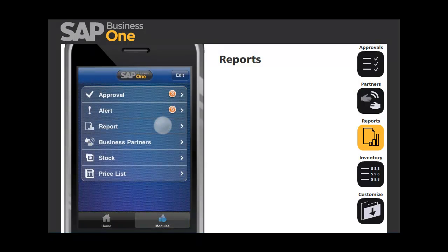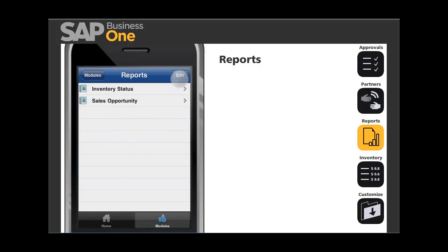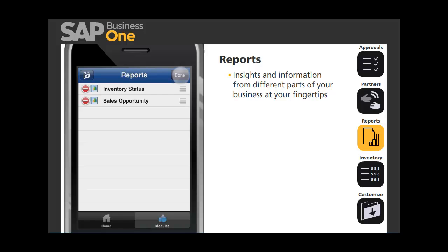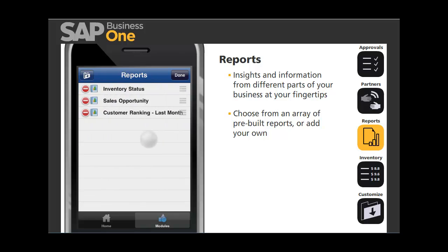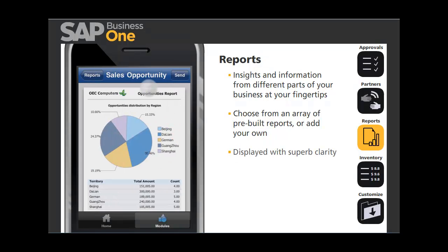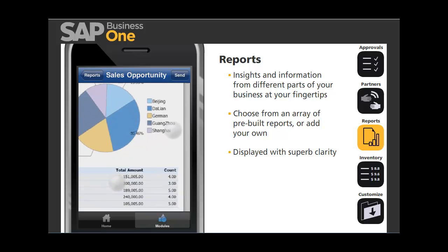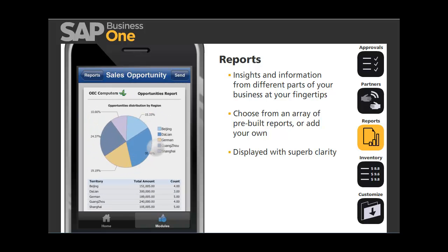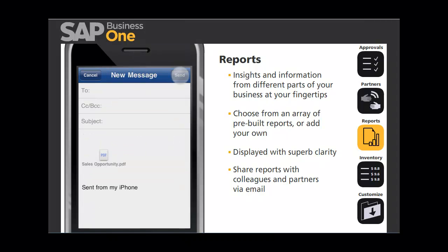Using the built-in reports enabled by SAP Crystal Reports software, you can get insights and information from different parts of your business at your fingertips. You can choose from an array of pre-built reports, or you can add your own customized reports to access the information that matters to you most. You'll be amazed to see how the reports are displayed with superb clarity on the iPhone's high-resolution screen. If you want to take a closer look at report details, you can easily zoom in and out using the multi-touch technology. The application also allows you to share reports with colleagues and partners via email — just click the Send button and type in the details.